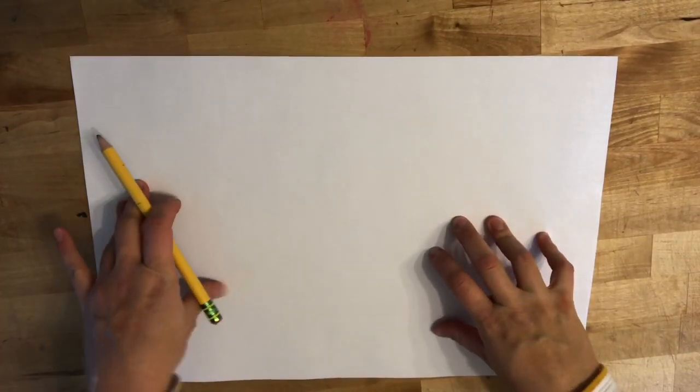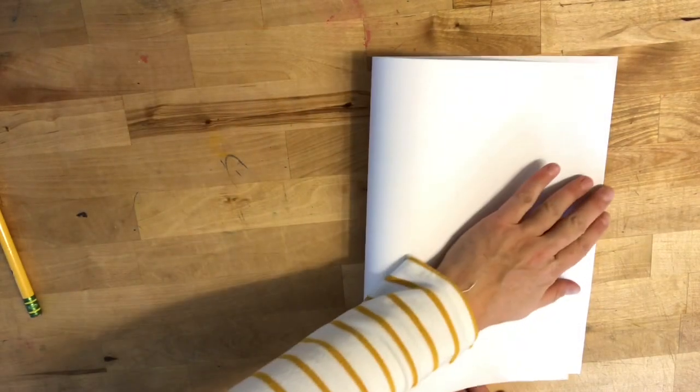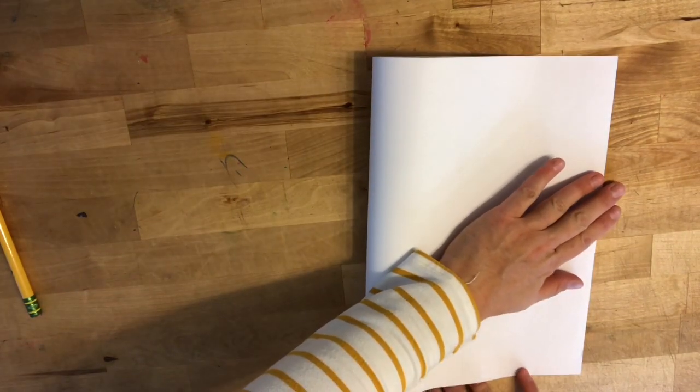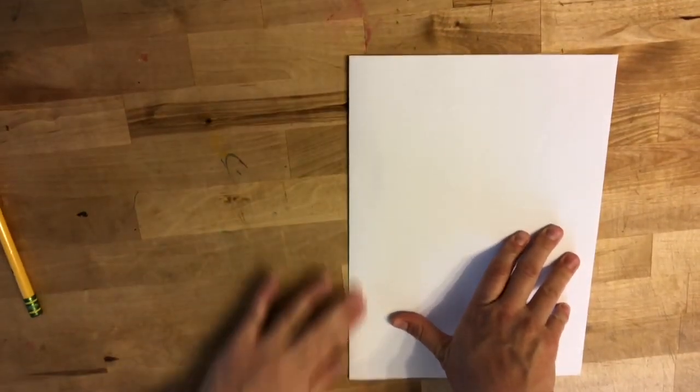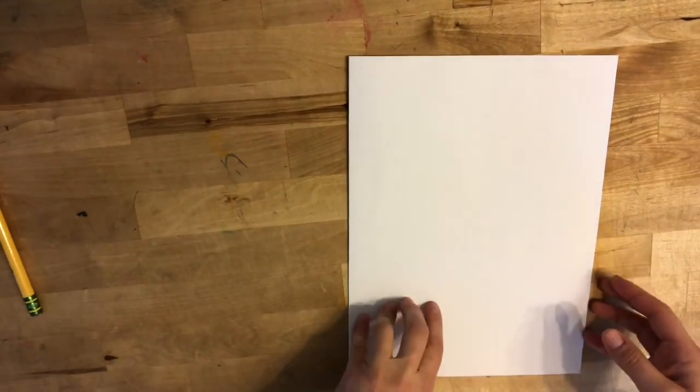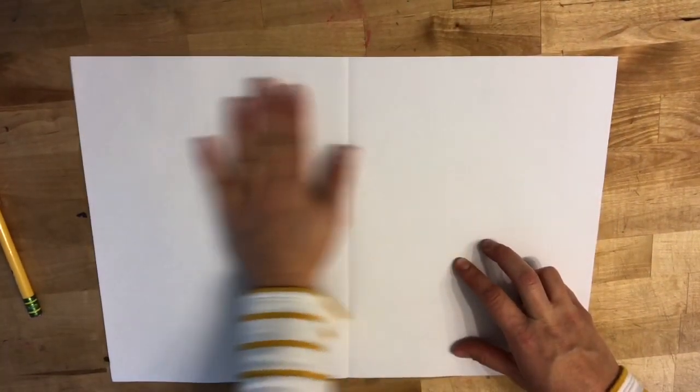Now we're going to take our big sheet of paper and fold it in half like a book, corner to corner. Give it a good rub on that middle crease. Then I'm going to open it back up and lay it flat.